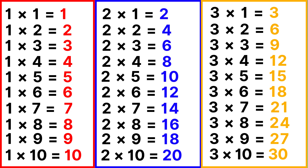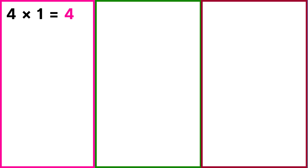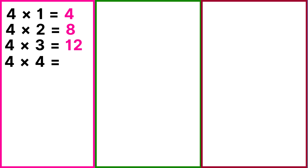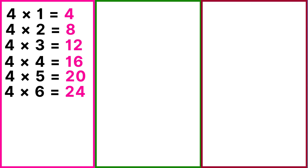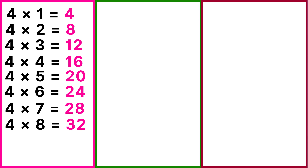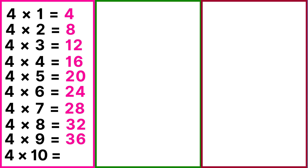3 tens are 30. Table of 4: 4 ones are 4, 4 twos are 8, 4 threes are 12, 4 fours are 16, 4 fives are 20, 4 sixes are 24, 4 sevens are 28, 4 eights are 32, 4 nines are 36, 4 tens are 40.